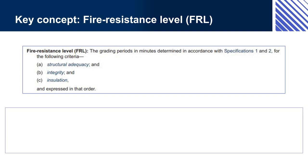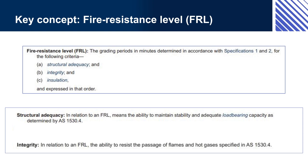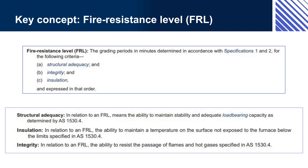An FRL has three parts, each of which measures one aspect of the fire resistance of an element. Structural adequacy, which measures its ability to maintain stability and load-bearing capacity when exposed to fire. Integrity, which measures how long it can resist the passage of flames and hot gases. Insulation, which measures how long the material can maintain a required minimum temperature on a surface not exposed to fire — that is, how long before other surfaces become too hot as a result of fire on another surface of the material. If one aspect is not applicable, the FRL will include a dash for that aspect.